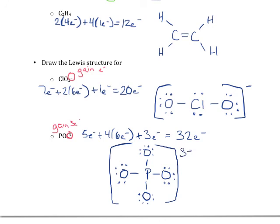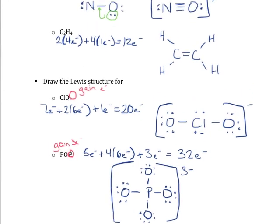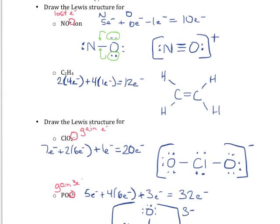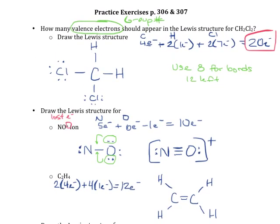These are the general steps you should take when drawing Lewis structures. First, figure out how many valence electrons you have to work with. Then build a skeleton of single bonds. Next, fill in all of your electrons on the outside, and never put in more electrons than you have. If you've placed all electrons but not all elements have filled octets, add double or triple bonds — you're just converting non-bonding electrons into shared bonding electrons. That's your general strategy. Practice over and over again until you get very comfortable, and try as many practice problems as you can find in the textbook, because we'll still be drawing Lewis structures in Chapter 9.